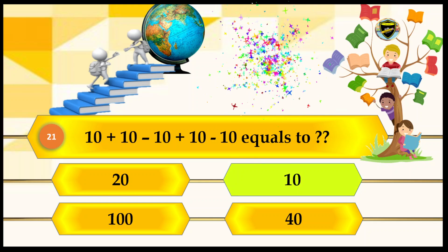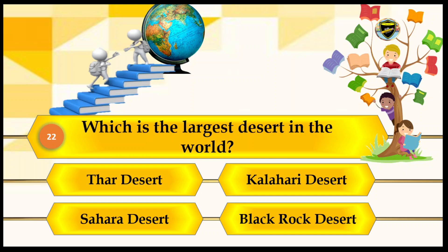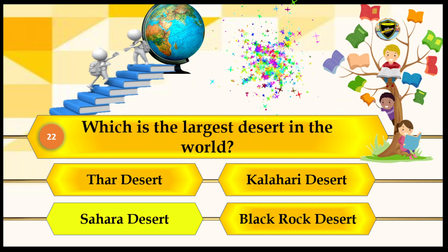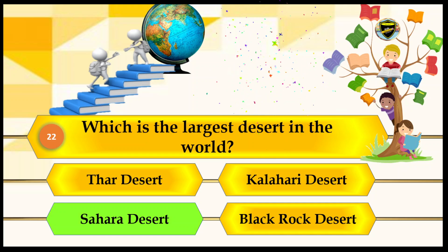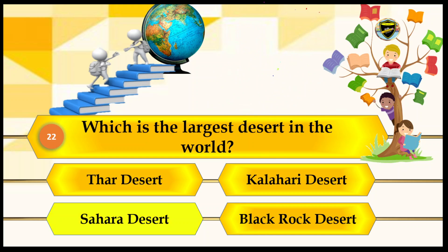The next question is: which is the largest desert in the world? Your options are Har Desert, Kalahari Desert, Sahara Desert, and Black Rock Desert. The answer is Sahara Desert. That's the correct answer — Sahara Desert is the largest desert in the world.